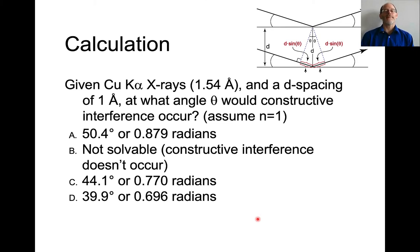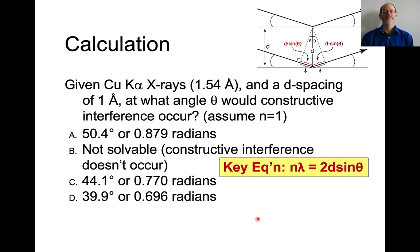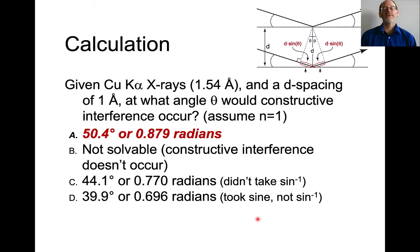So now let's do a quick calculation. If we have copper K-alpha x-ray, so lambda is 1.54 angstroms, and we have a d-spacing of 1 angstrom, at what angle theta would constructive interference occur? Let's say n equals 1. And the answer is a little over 50 degrees.